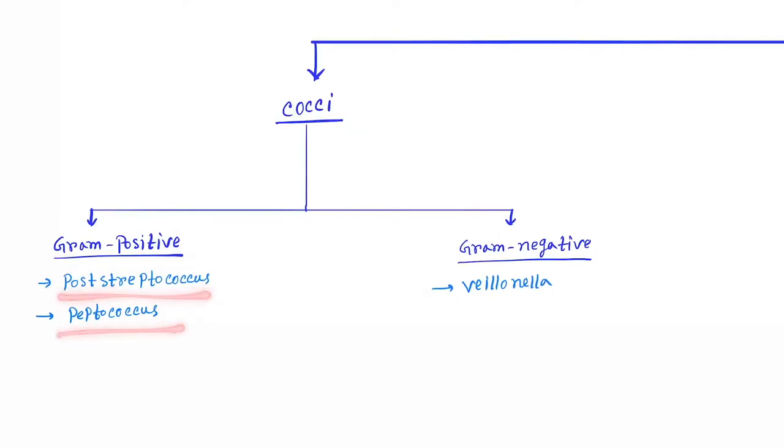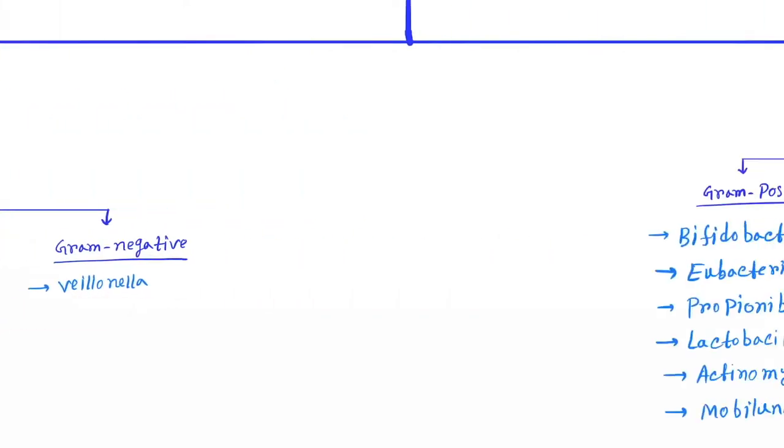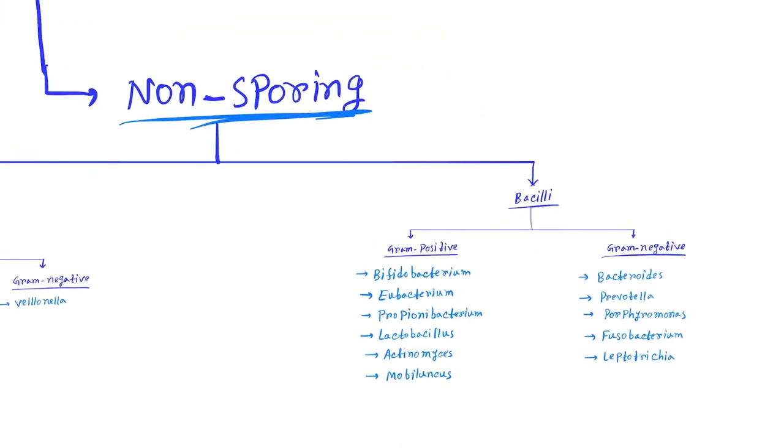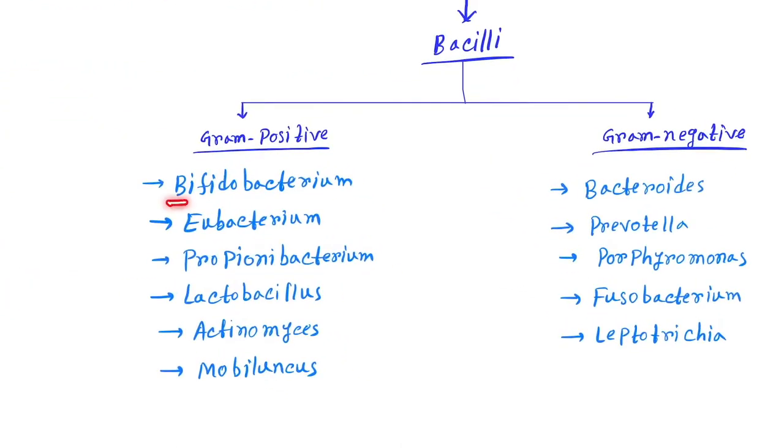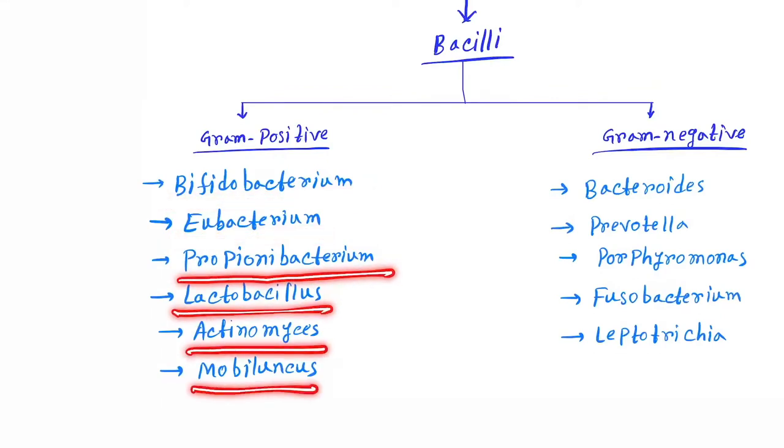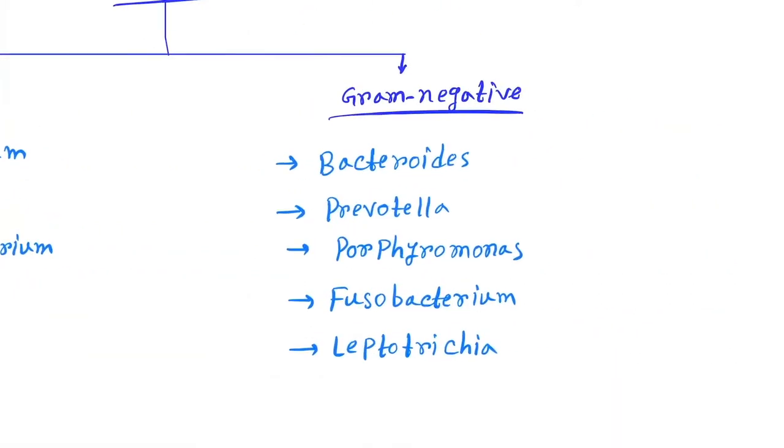Next, non-sporing cocci. Gram positive: Peptostreptococcus, Peptococcus. Gram negative: Veillonella. Bacilli, gram positive is Bifidobacterium, Eubacterium, Propionibacterium, Lactobacillus, Actinomyces, Mobiluncus. Gram negative is Bacteroides, Prevotella, Porphyromonas, Fusobacterium, and Leptotrichia.